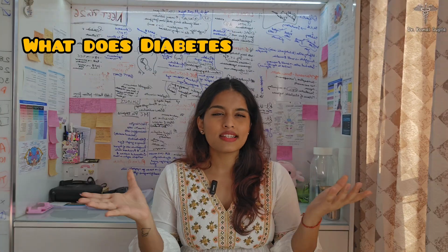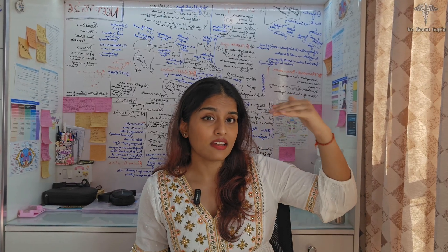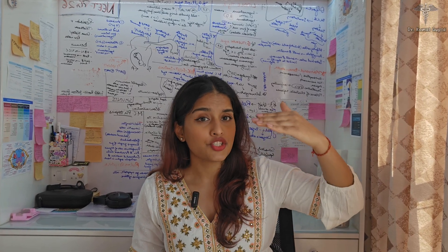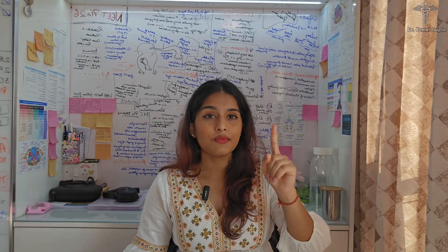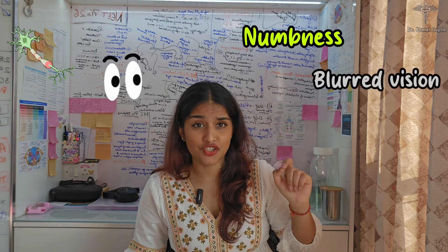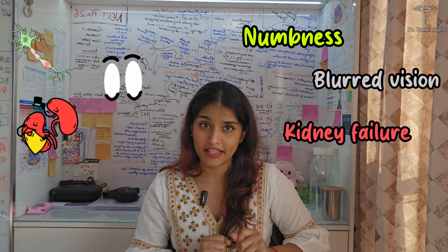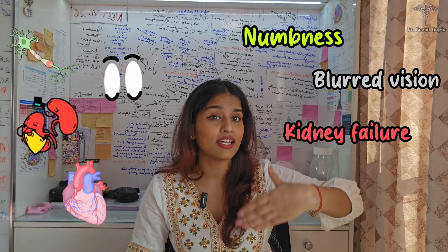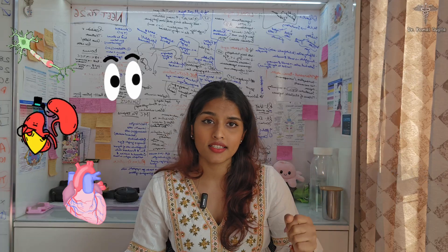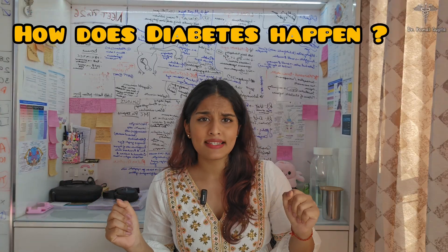So what does diabetes do to our body? When blood sugar levels remain high for a long time, it slowly starts damaging each and every organ. It damages your nerves, causing numbness; your eyes, causing blurry vision; your kidneys, leading to kidney failure; and your heart, increasing the risk of heart attack. It's like the sugar has become toxic after overstaying its welcome.